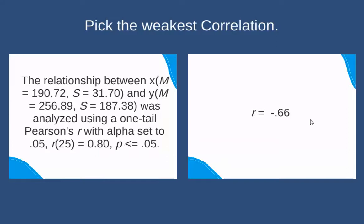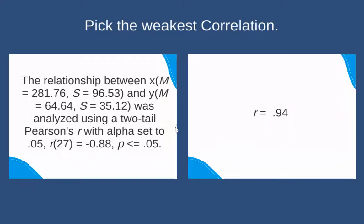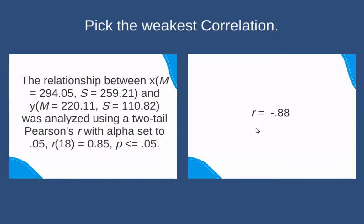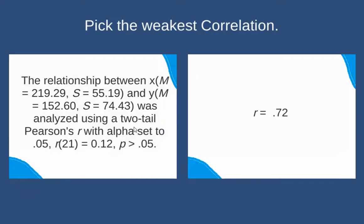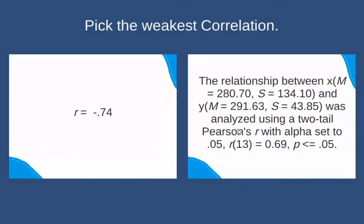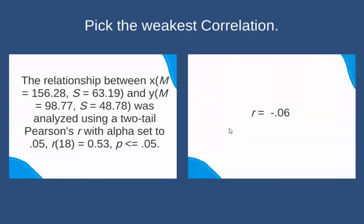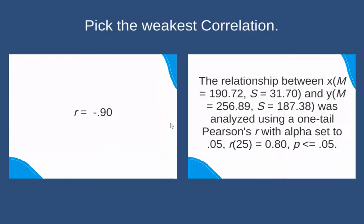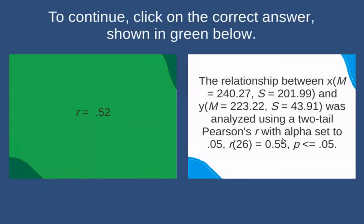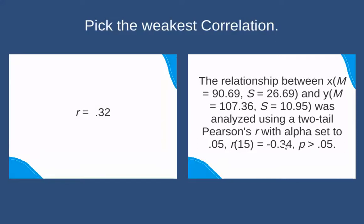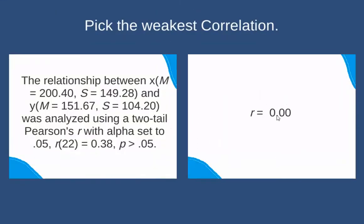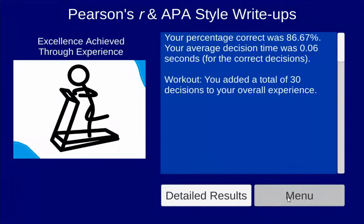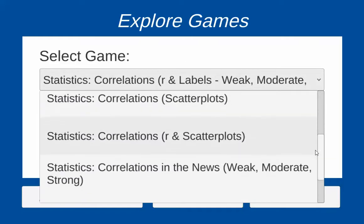For example, 0.80 versus negative 0.666 — negative 0.666 is closer. Comparing 0.12 to negative 0.37, this helps you become more familiar with how write-ups are done and how to pull out the relevant information. Negative 0.88 versus negative 0.82, then 0.55 versus 0.52 — 0.52 is closer. As you can see, we're ignoring the sign; it's just whichever one is closest to zero. A correlation of zero would be the weakest. Correlations range from negative 1 to positive 1 — the further they are from zero, the stronger; the closer, the weaker.